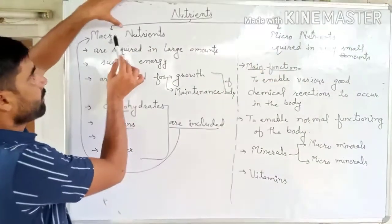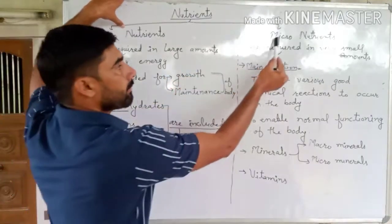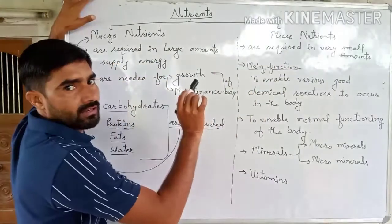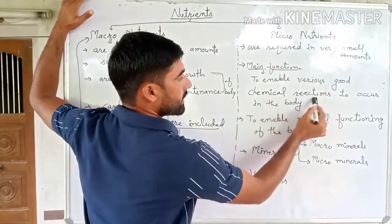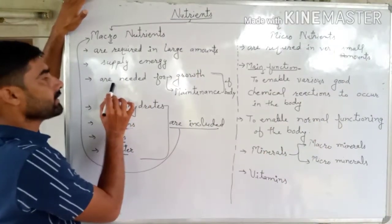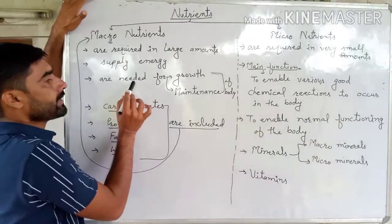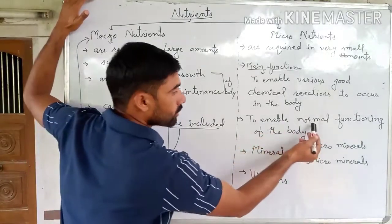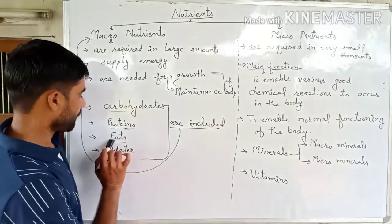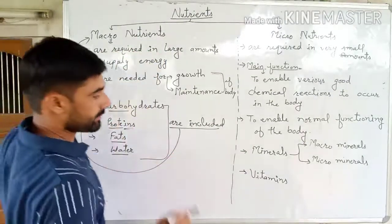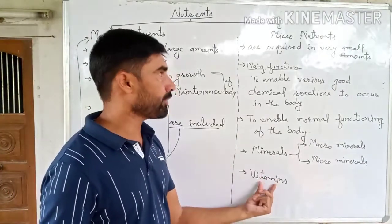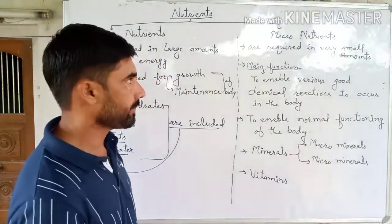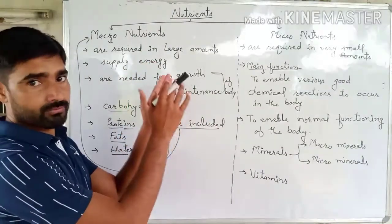To summarize the difference: macronutrients are required in large amounts, while micronutrients are required in very small amounts. The main function of macronutrients is to supply energy and support growth and maintenance of the body. Micronutrients enable chemical reactions and normal functioning. Carbohydrates, proteins, fats, and water are included in macronutrients; minerals and vitamins are included in micronutrients.